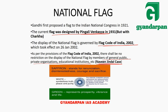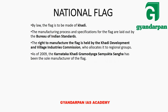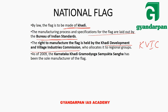Regarding color significance: saffron color represents renunciation — the feeling of sacrifice and courage. White color represents peace. Green represents prosperity, vibrance, and progress. The Dharma Chakra's 24 spokes represent the 24 hours of a day. The flag must be made of Khadi, and the manufacturing process specifications are set by the Bureau of Indian Standards.